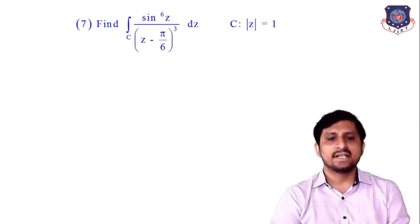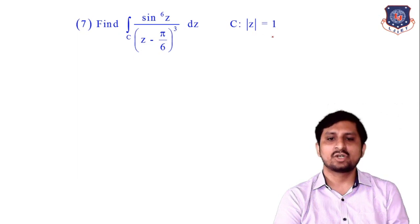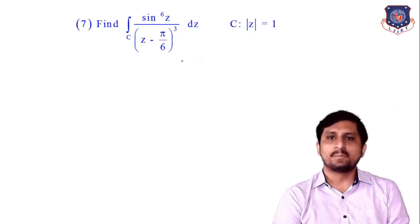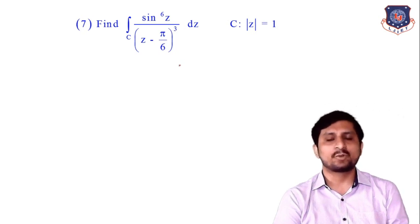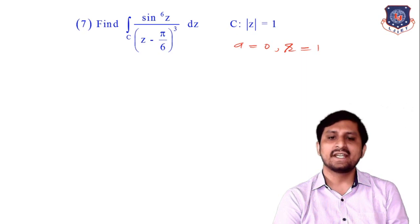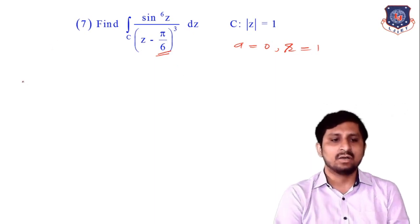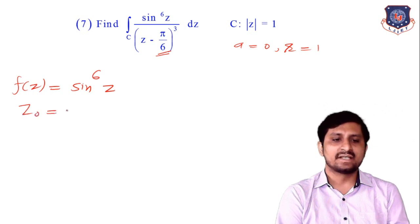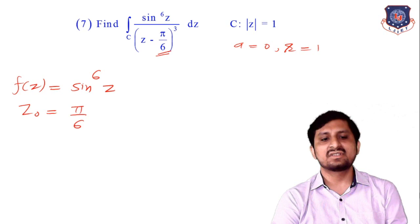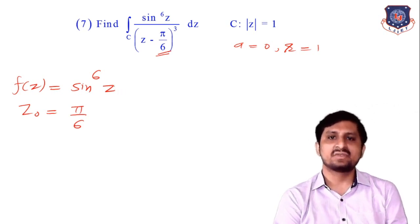Let's solve one more example: integration of sin^6(z) upon (z − π/6)^3 dz, where the circle |z| = 1. Clearly a = 0 and r = 1, and π/6 ≈ 0.52 is inside the given circle C. f(z) = sin^6(z) and z₀ = π/6. Write the two statements: f(z) = sin^6(z) is analytic over the contour C, and z₀ = π/6 is inside the given circle C.